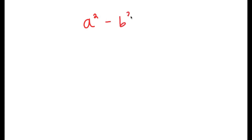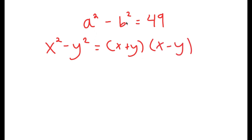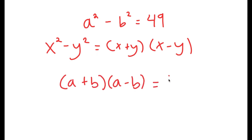So in this video, I'm going to solve the equation a squared minus b squared is equal to 49. To solve this, I'm going to use the property that states that if I have something in the form x squared minus y squared, this is equal to x plus y times x minus y. In this case, a squared minus b squared: a is x and b is y. So this turns into a plus b times a minus b is equal to 49.